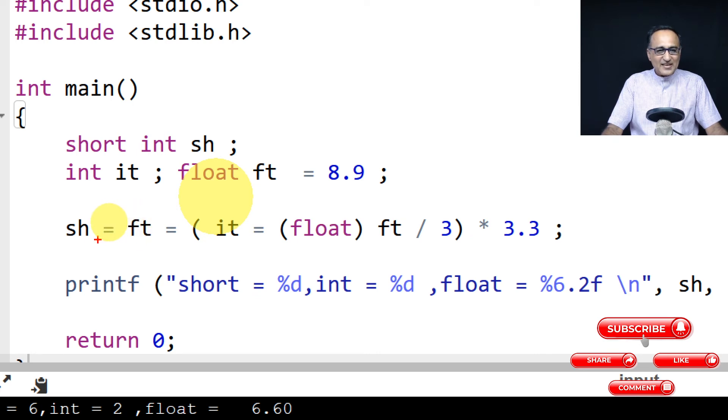And then sh is going to be assigned 6.6. But it can't hold the point six because it's an integer type. So sh only holds the value six.